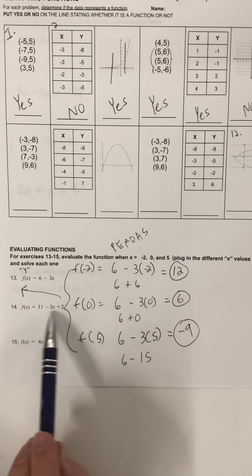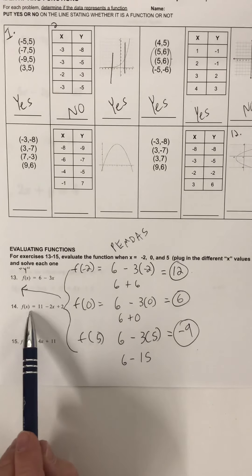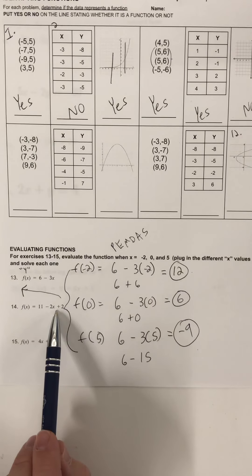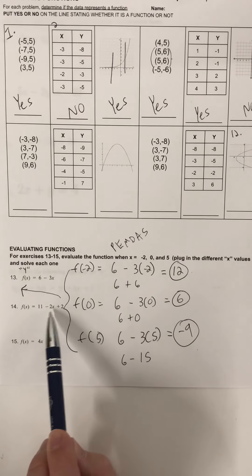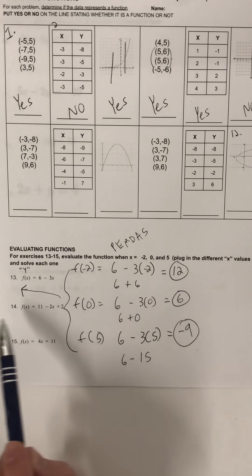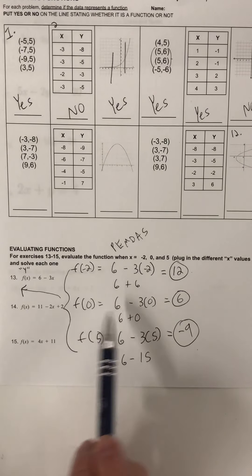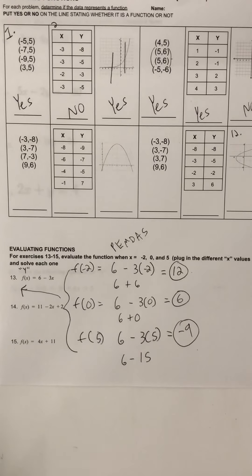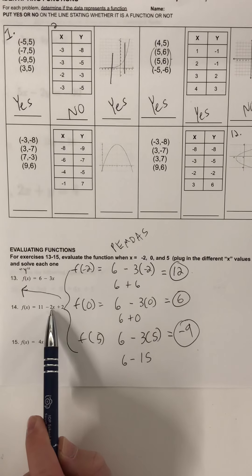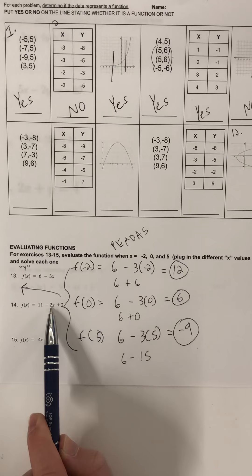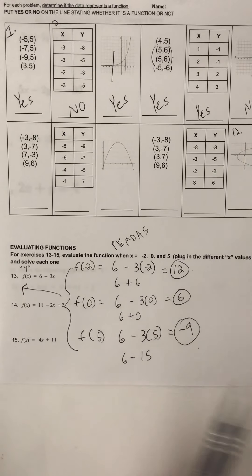For number 14, there are different terms going on. I would recommend plugging in the x-value, solving — doing the multiplication — and then just adding or subtracting from left to right like we did last week. Don't let the multi-term confuse you. Once you plug in the x-value and do the calculation, we're just moving left to right depending on what you get.